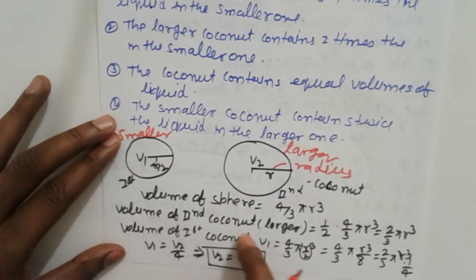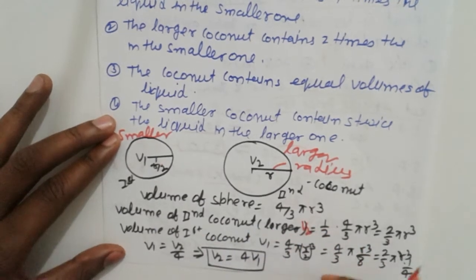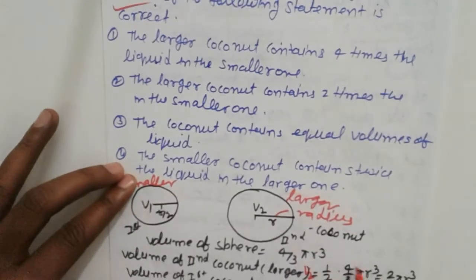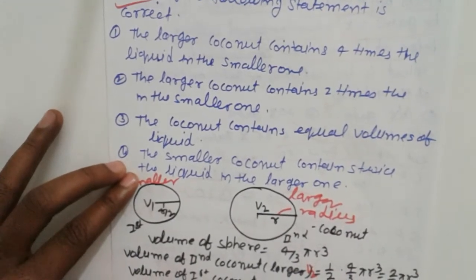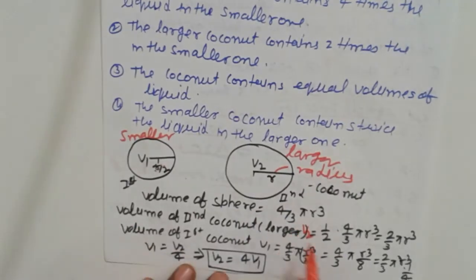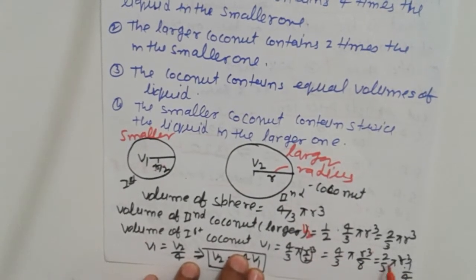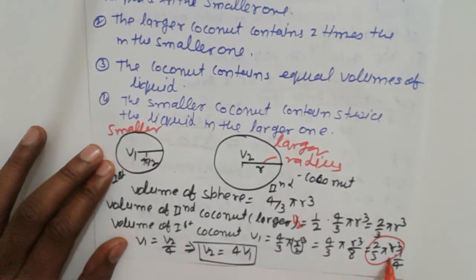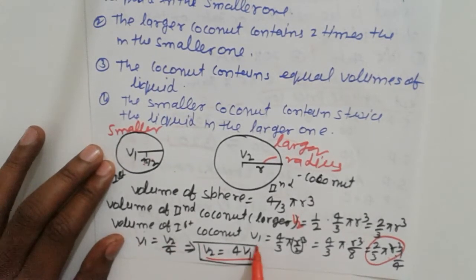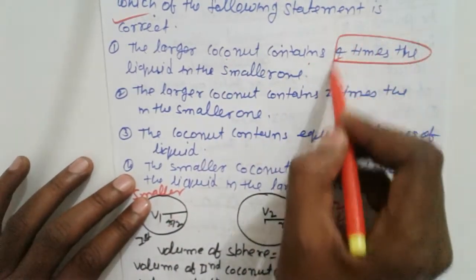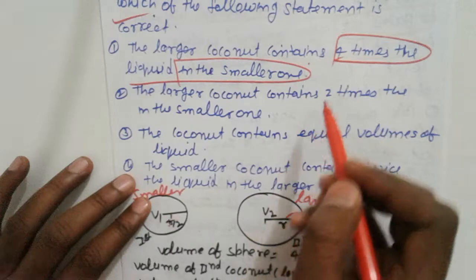Volume of sphere is (4/3)πr³. Volume of larger coconut V2 half-filled = (1/2)(4/3)πr³. Volume of smaller V1 = (4/3)π(r/2)³ = (2/3)πr³ / 4. Simplifying: V2 = 4·V1, so the larger coconut contains 4 times the liquid of the smaller.